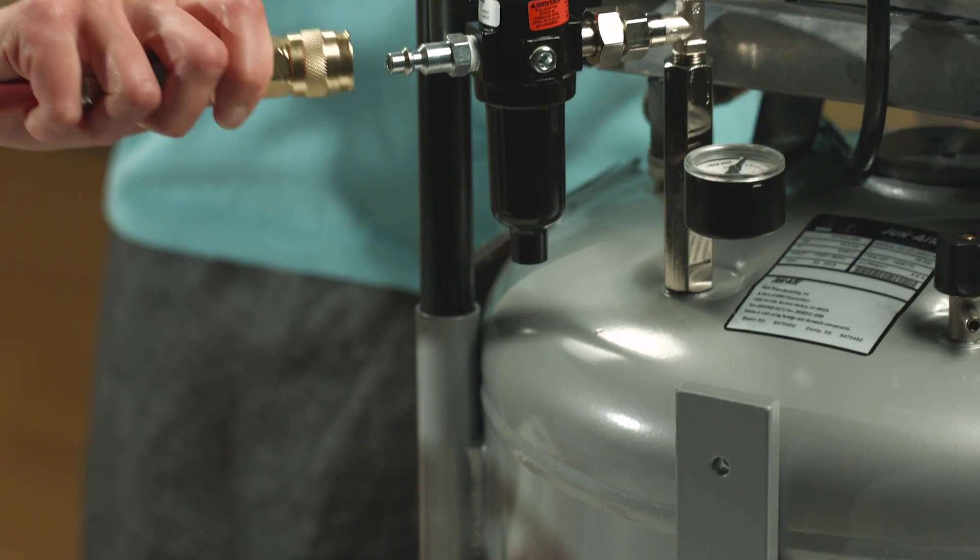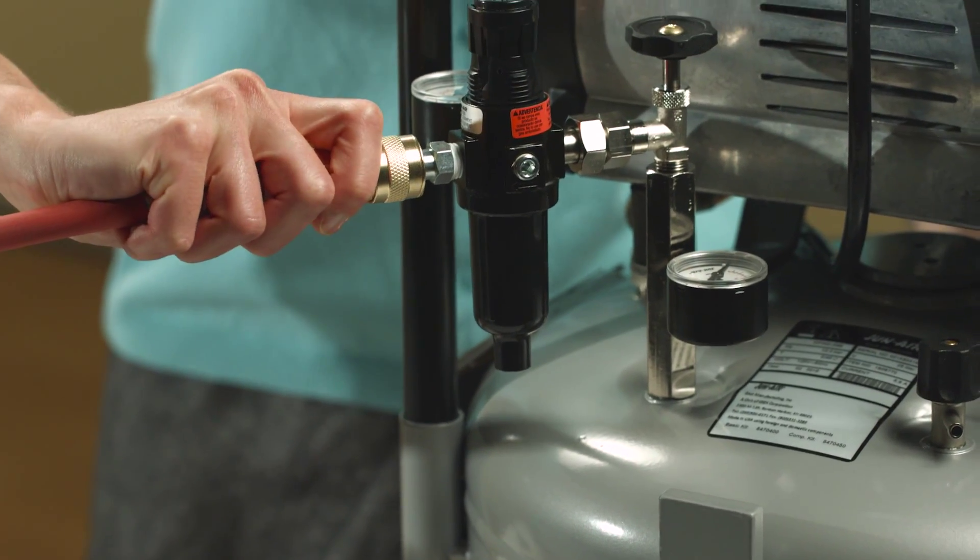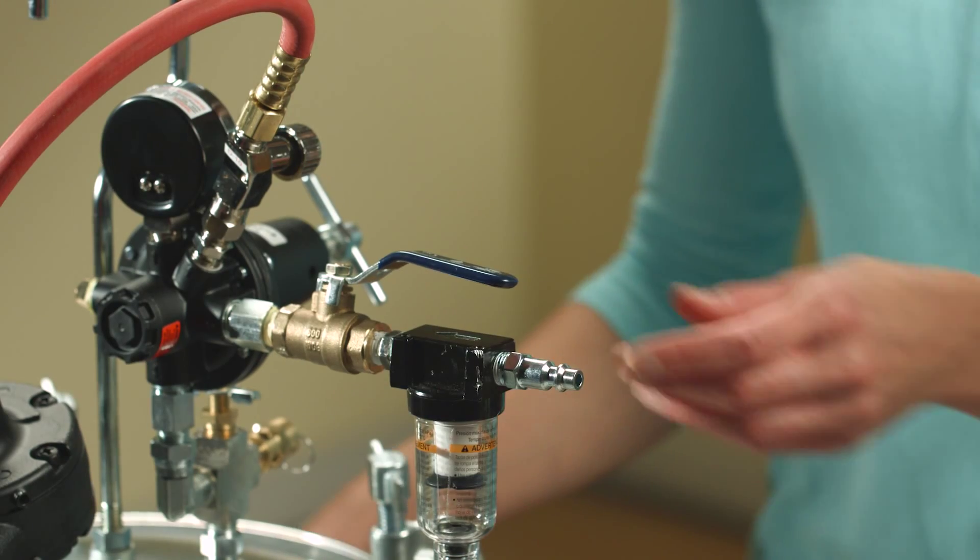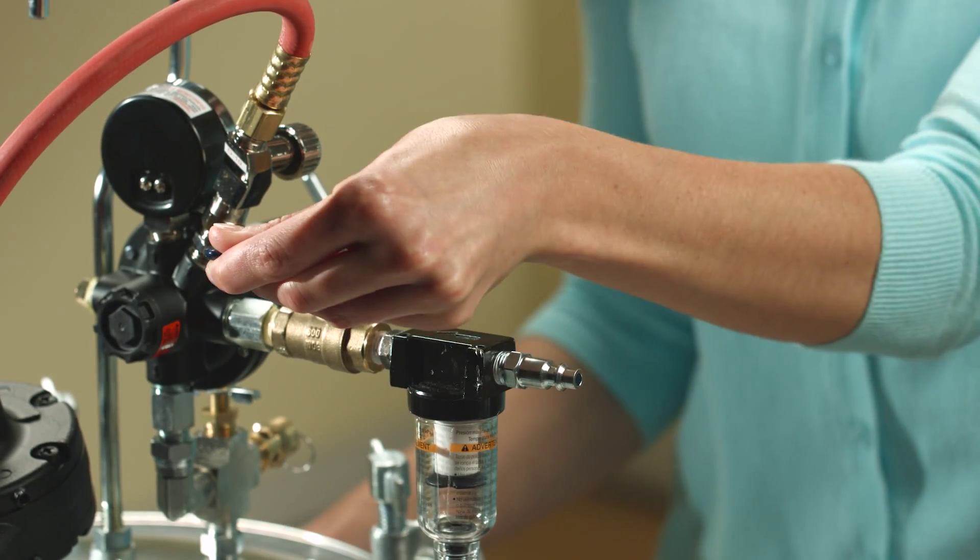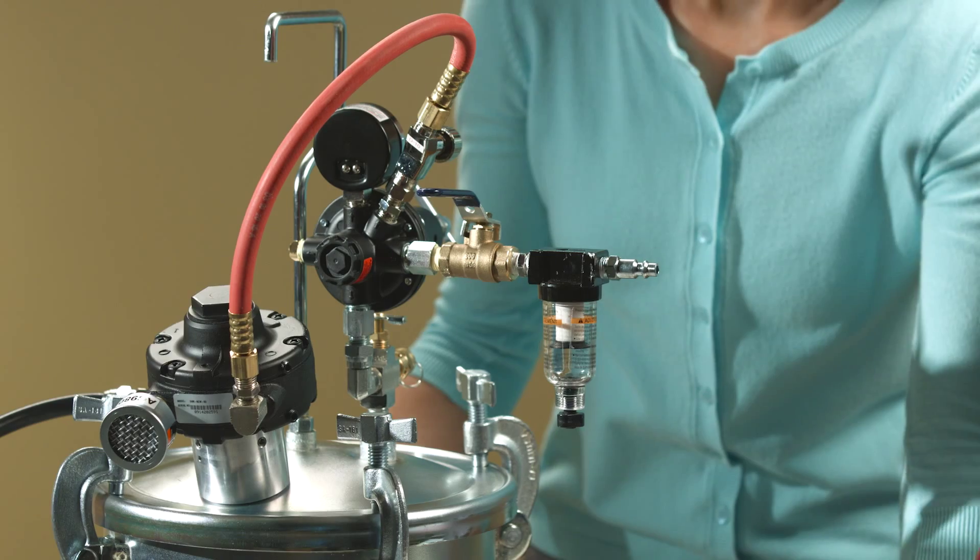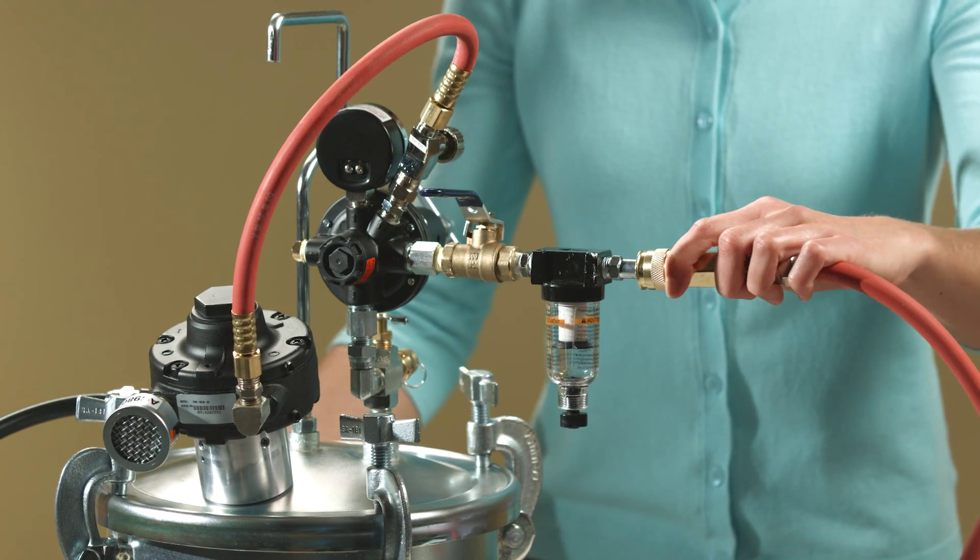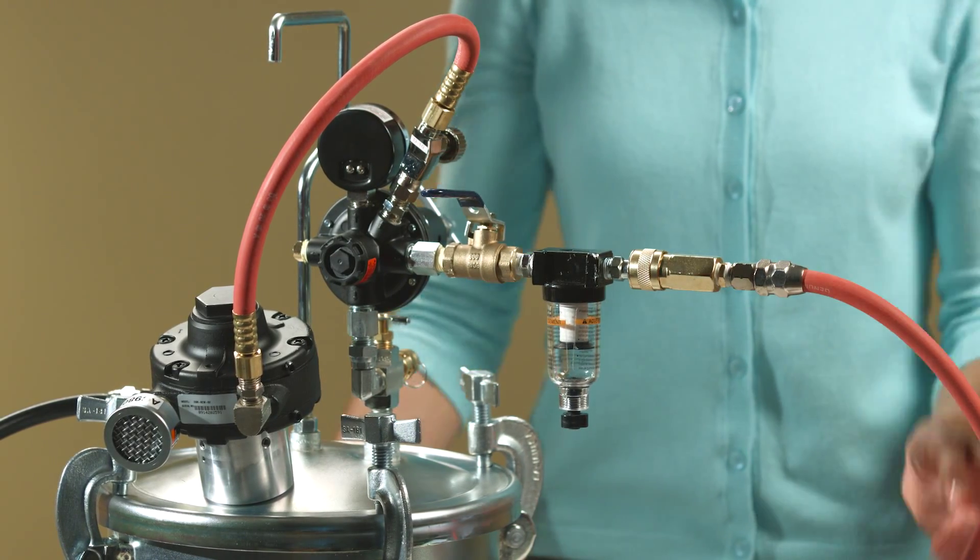Connect the hose to the air compressor. You will hear a click when the hose is firmly in place. Check that the main valve on the spray tank is closed. Connect the other end of the hose to the spray tank. You will hear a click when it is firmly in place.